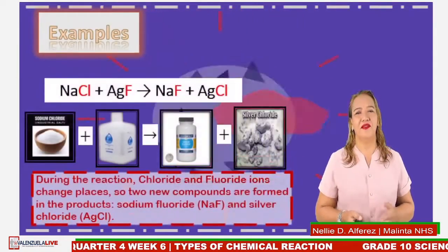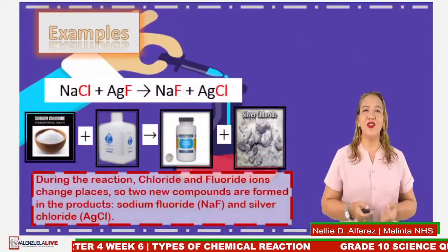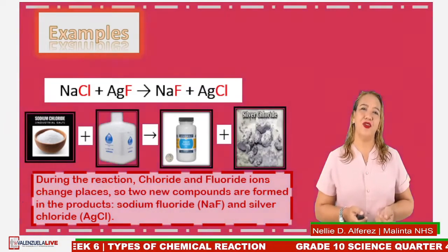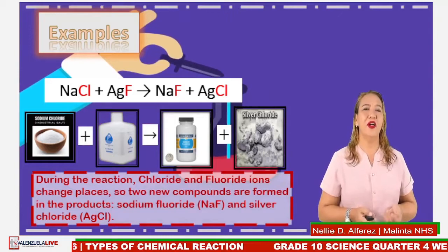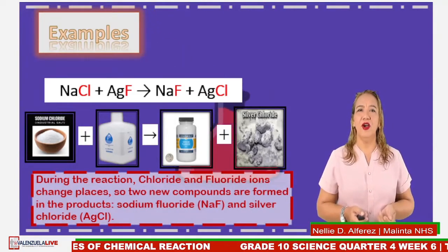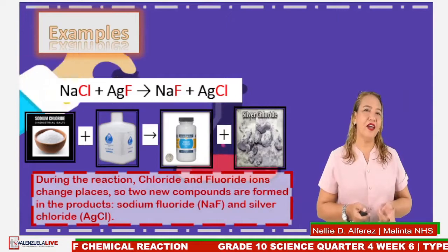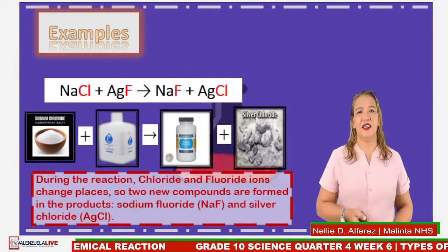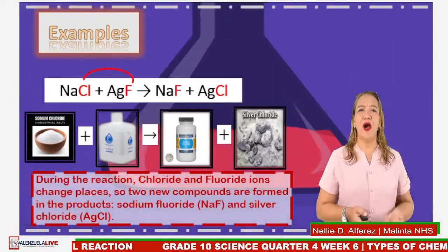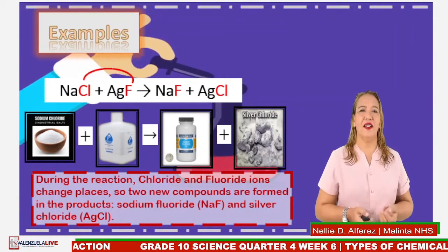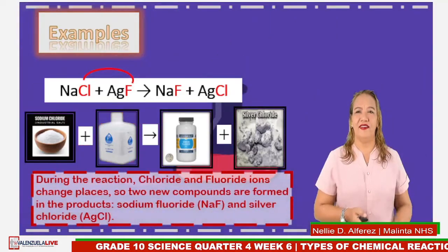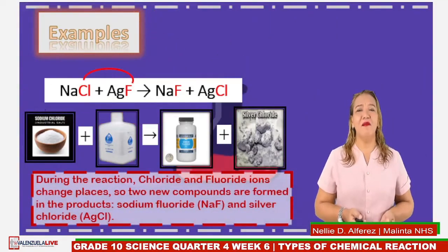For example, sodium chloride reacts with silver nitrate yields sodium nitrate and silver chloride. During the reaction, the chloride and nitrate ions change places. So new compounds are formed in the product — sodium nitrate and silver chloride. The equation is balanced.